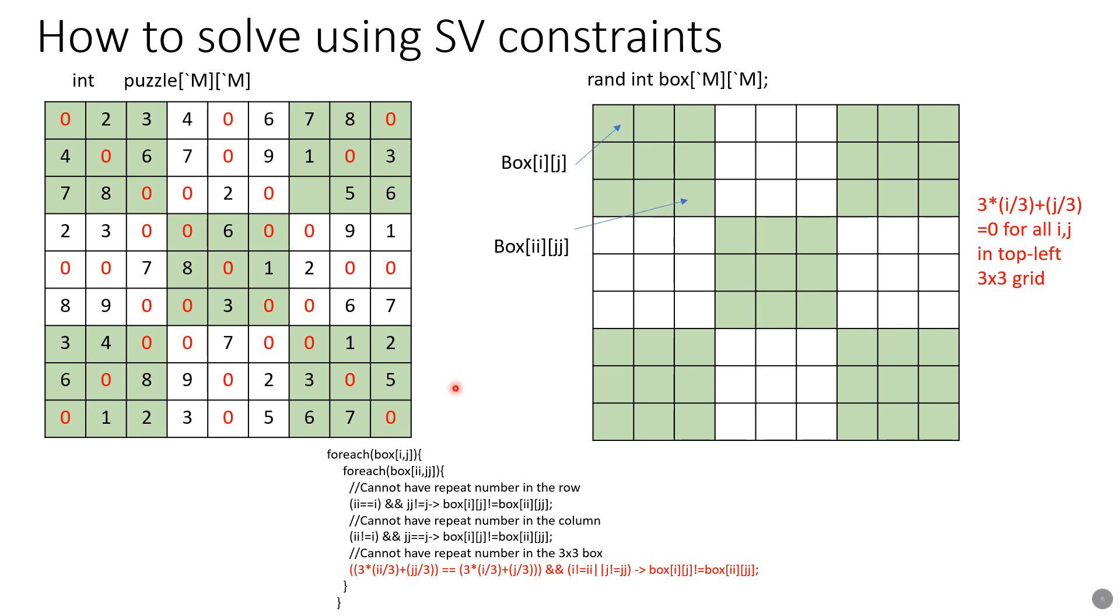Now we have to deal with the last constraint which says that the integer values in each of these 3 by 3 grids cannot have any repetition. To write the constraint for that, let's first observe this expression: 3*(i/3) + j/3. Let's suppose i and j are the coordinates of each of these boxes. In this 3 by 3 grid, the topmost has coordinate (0,0) and this one has (2,2). If we plug in (0,0) in this expression, you will see it will come out to be 0. If we plug the max value (2,2) in this expression, it will also come out to be 0.